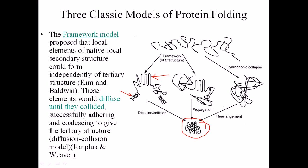What is happening is that they actually diffuse until they coil. They make regional secondary structures, and these regional secondary structures start to diffuse and finally form the coiled structure.